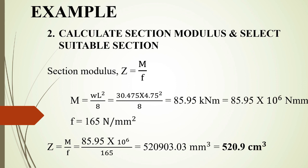Now we calculate the section modulus and select the suitable section. The section modulus Z = M/f. The bending moment M = WL²/8 = 85.95 kNm. We convert kNm to N·mm (multiply by 10⁶). Then we divide by the permissible bending stress to get Z. If we want Z in cm³, we convert from mm³ by dividing by 10³.